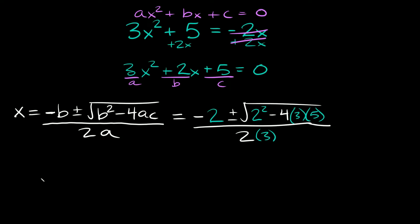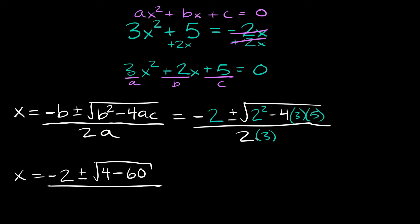So if we simplify this a little bit more, we're going to get x is equal to negative 2 plus or minus — inside the radical we get 2 squared which is 4, so the square root of 4 minus this right here: 4 times 3 is 12, and 12 times 5 is 60, so minus 60 — and that's all over 2 times 3 which is 6. If we simplify again, that gives us negative 2 plus or minus the square root of 4 minus 60, which is negative 56, all over 6.